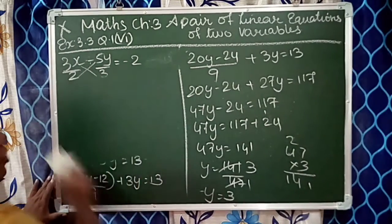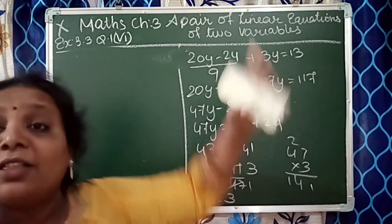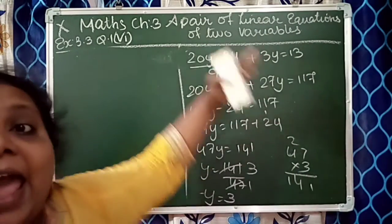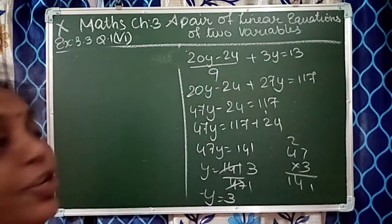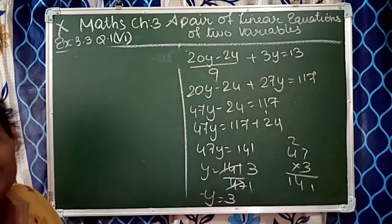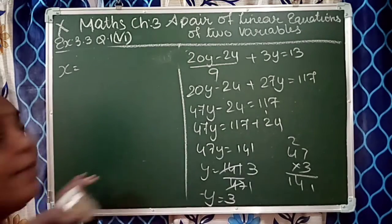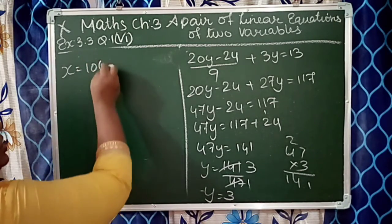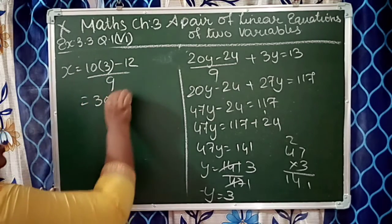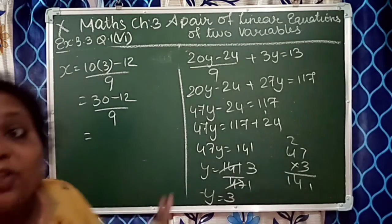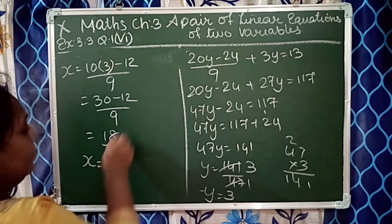Now what will we do? We got the value of y as 3. Now we'll put this in the first equation where x is equal to (10y minus 12) upon 9. We'll substitute the value of y in this equation. x is equal to 10 times 3 minus 12 upon 9. 30 minus 12 upon 9. 30 minus 12 is 18. 18 upon 9. So the value of x is 2.